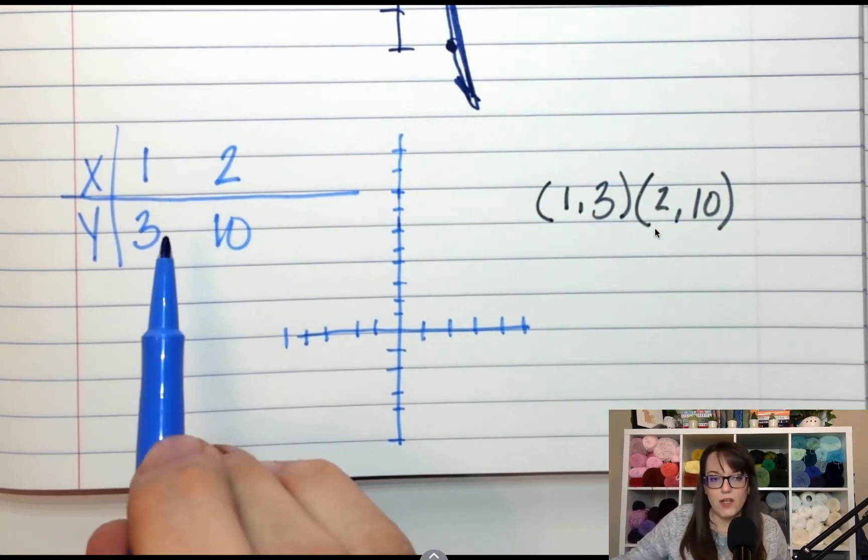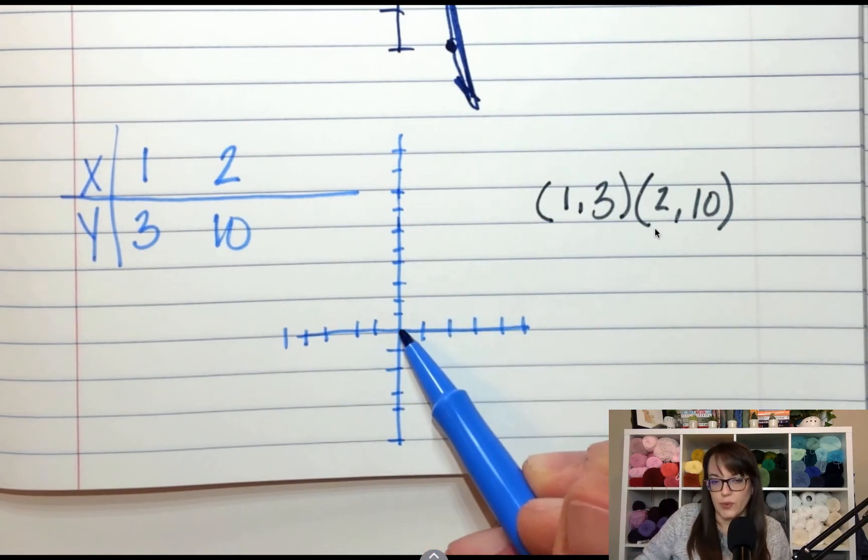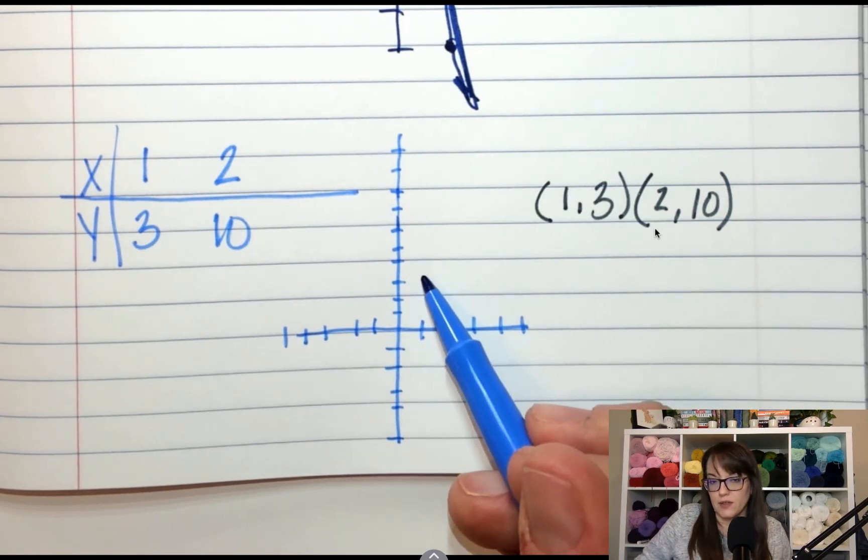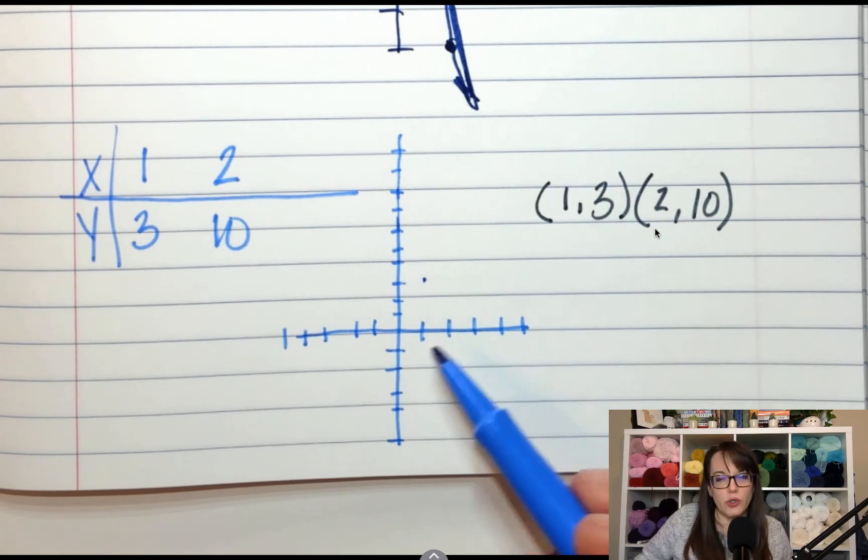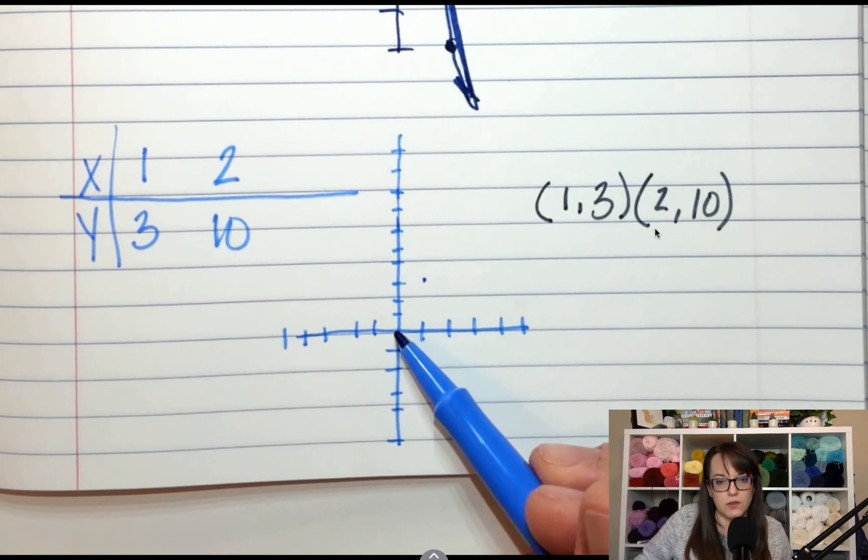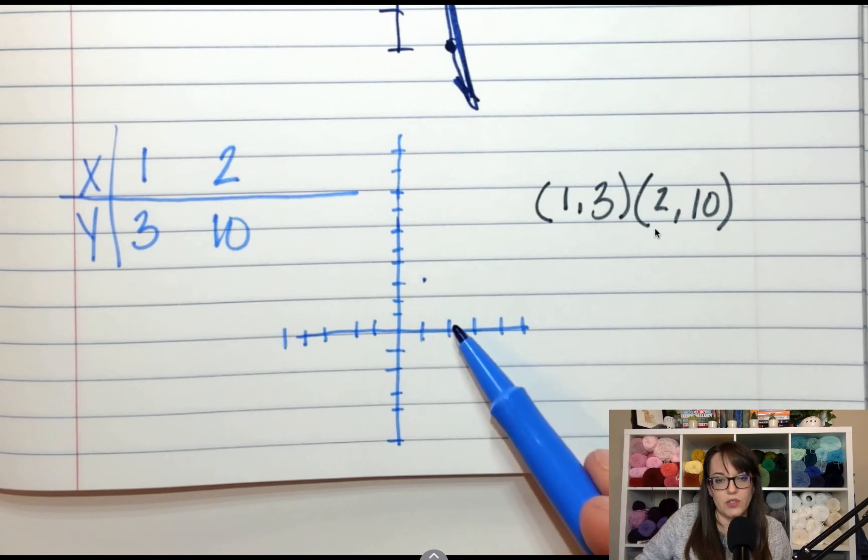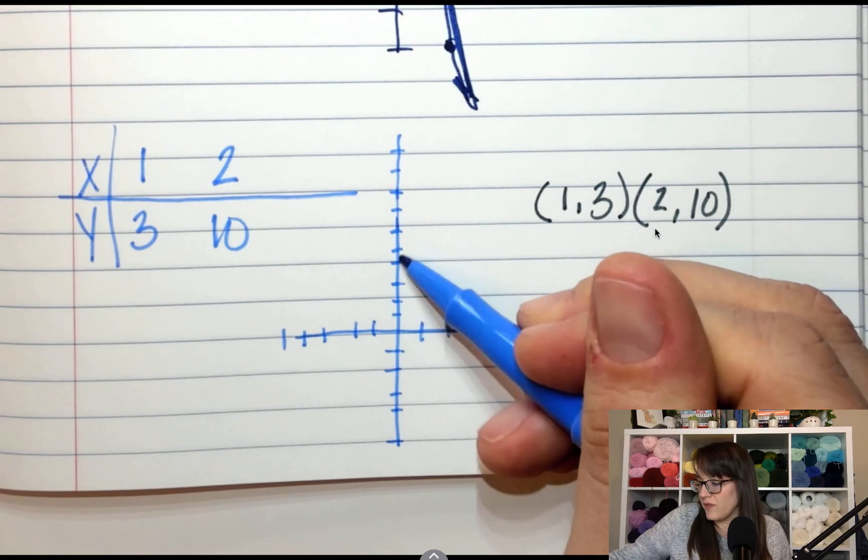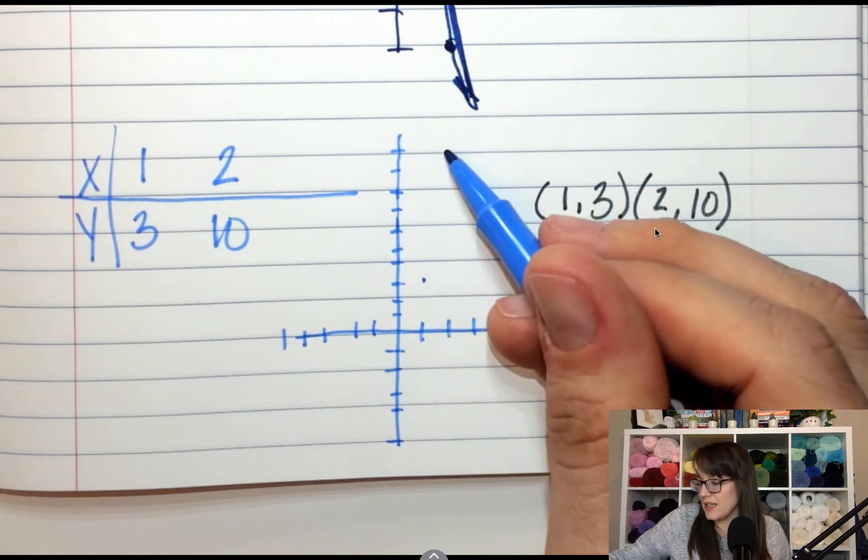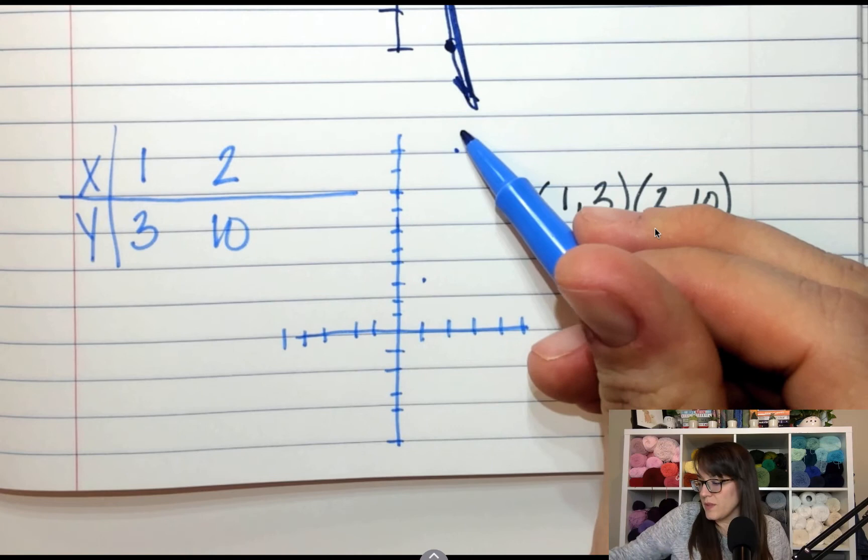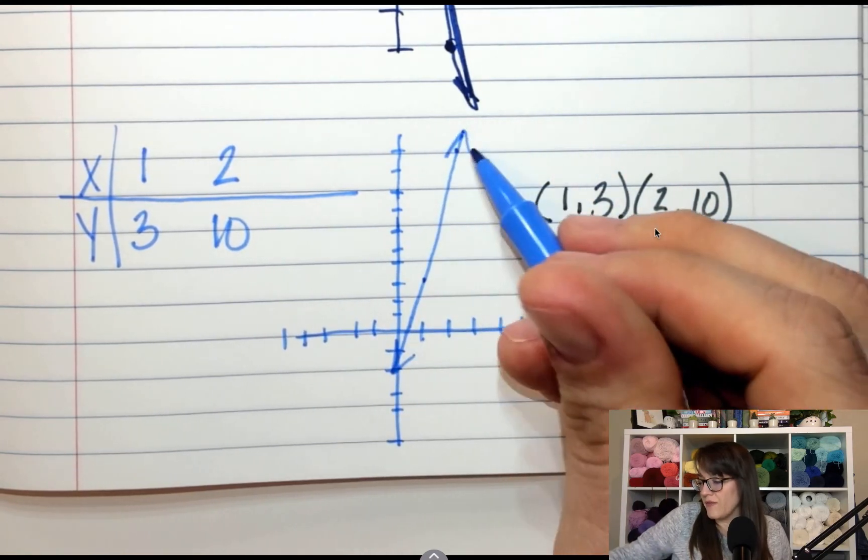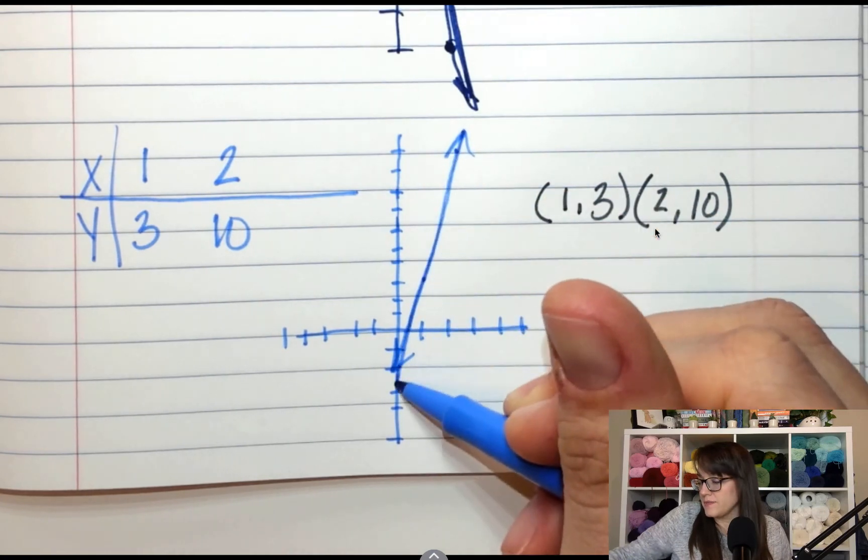So the first one, (1, 3). How do I get to (1, 3) from the origin? I'm going to go right 1 and up 3. What about (2, 10)? Where do I go? Right 2 and up to this 10 up here. 1, 2, 3, 4, 5, 6, 7, 8, 9, 10. (2, 10). Right there. I'm going to connect these two dots. I don't know if it goes to the origin. I feel like I bent my line. Okay.